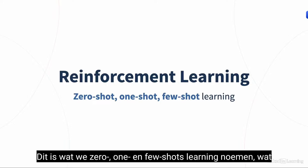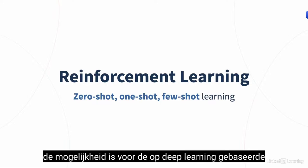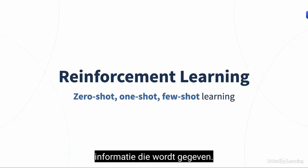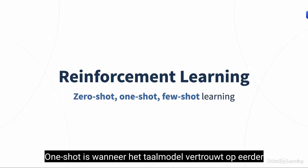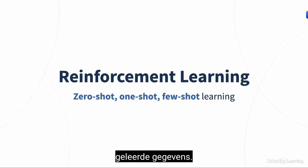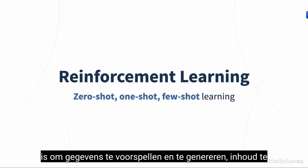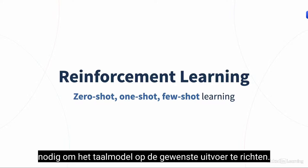This also helps reinforce training through zero, one, and few-shot learning — the ability for deep learning-based language models to learn on the fly with new information given. Zero-shot is when the model relies on previously learned data. One-shot means one input and one example is enough to predict and generate content. Few-shot requires more examples to direct the language model toward desired outputs.